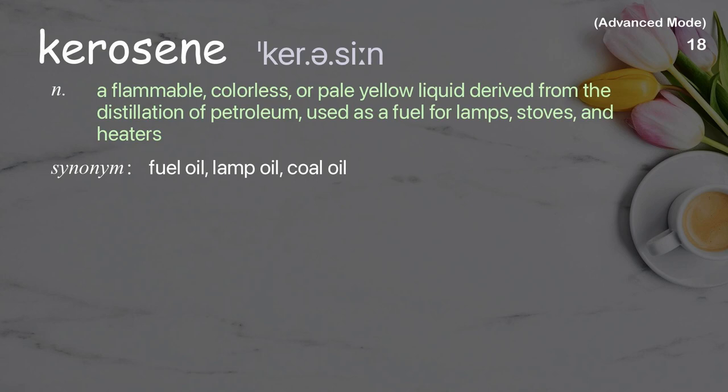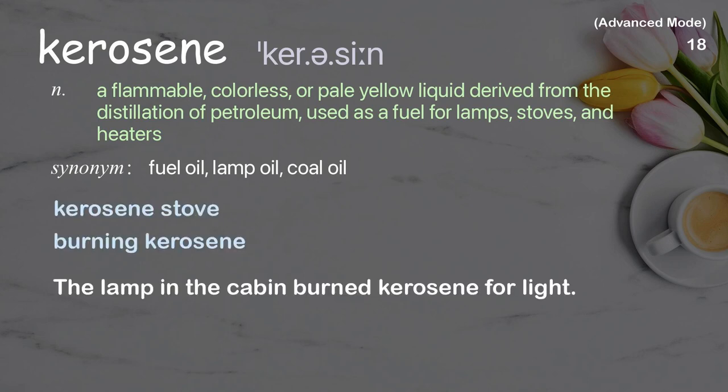Kerosene: A flammable, colorless, or pale yellow liquid derived from the distillation of petroleum, used as a fuel for lamps, stoves, and heaters. Examples: Kerosene stove. Burning kerosene. The lamp in the cabin burned kerosene for light.